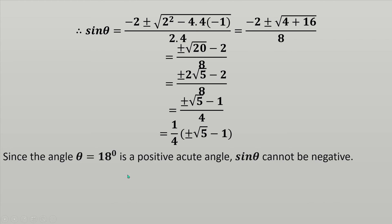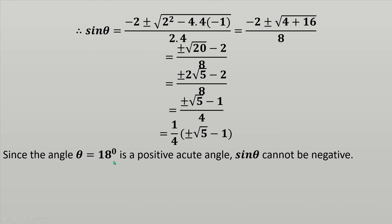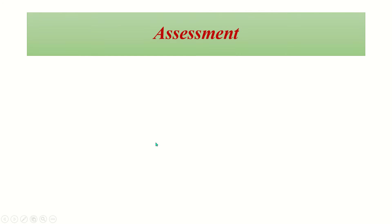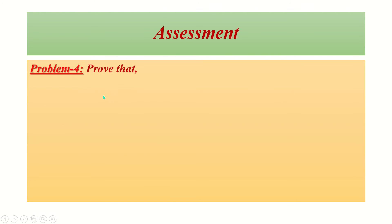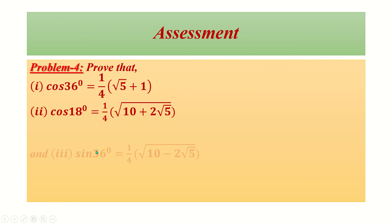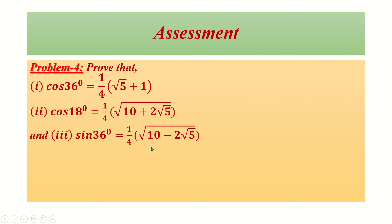Since θ = 18° is a positive angle, sinθ cannot be negative. Therefore sin18° = (1/4)(√5 - 1). Assessment — Problem 4: cos36° = (1/4)(√5 + 1); cos18° = (1/4)√(10 + 2√5); cos36° = (1/4)√(10 - 2√5).